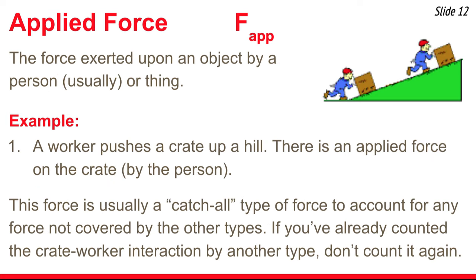Our final contact force is the applied force — the force exerted upon an object by a person pushing or pulling on it. For example, a worker who pushes a crate up a hill has an applied force acting upon the crate. This force is usually a catch-all to account for any force not covered by the other types. Many people would refer to this as a normal force instead, since it results from two objects pressing together. If you've already counted that interaction under another force type, you wouldn't count it again as an applied force.